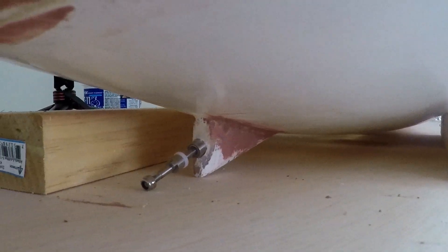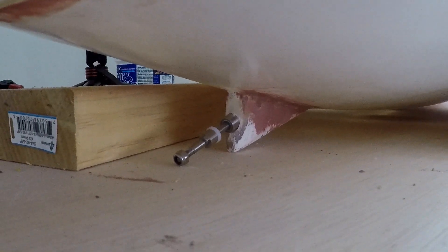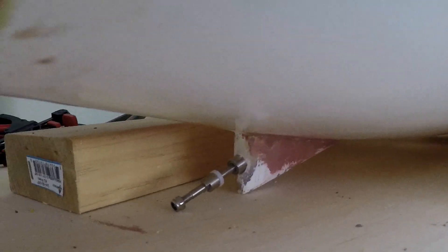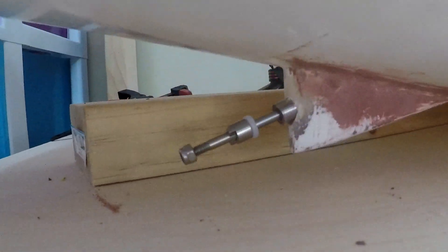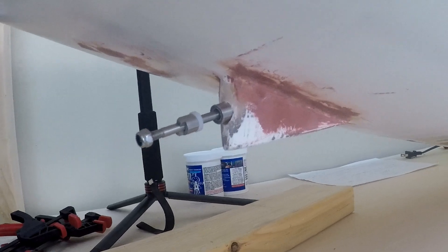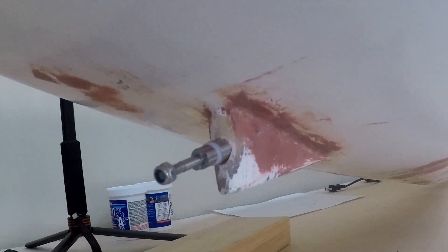This is the part where the propeller is going to be. I will be using silicone to seal the transmission tube and the hull. It should be enough to prevent any leak of water.